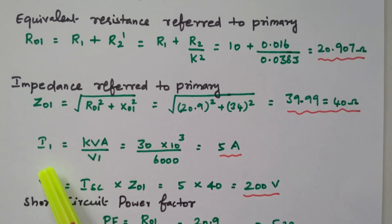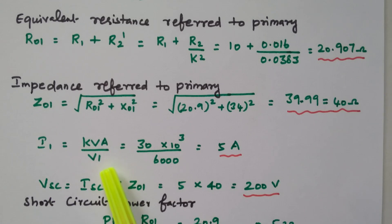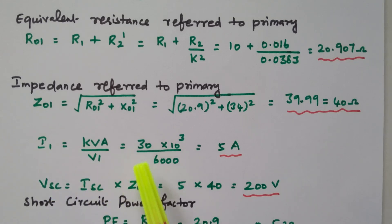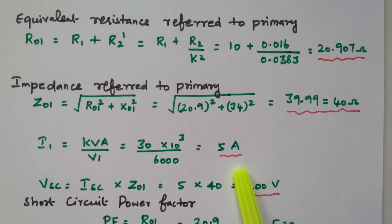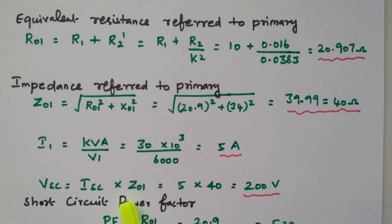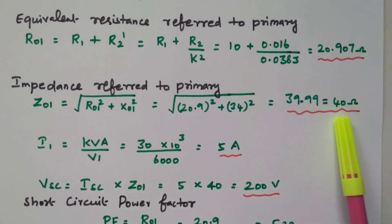Now we calculate the current from the kVA rating and voltage. I1 equals kVA divided by V1 — that is 30 × 10³ divided by 6000 — giving 5 ampere. From that we can find the short-circuit voltage: VSC equals I1 × Z01, which is 5 × 40, giving 200 volts. The short-circuit voltage is 200 volts.